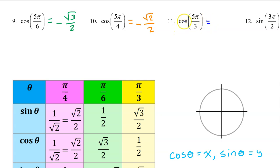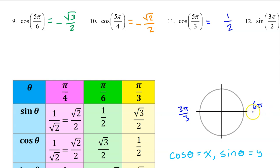Number 11. The cosine of 5π/3 will be the same as the cosine of π/3, which is 1/2, except it might be negative depending on the quadrant. We can think of π as 3π/3 and 2π as 6π/3. So 5π/3 will be one multiple before 6π/3 — that's in the fourth quadrant. Cosine is the x value on the unit circle, and x values are positive in the fourth quadrant. So the answer will remain positive 1/2.